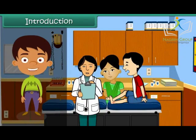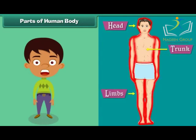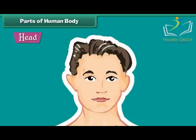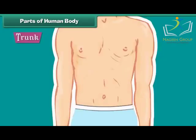In this lesson, you will learn about the different organ systems of our body and their functions. The human body is divided into three main parts: head, trunk, and limbs. The head is the uppermost part of the body. Eyes, ears, nose, and mouth are located on it. The trunk is the middle part of the body and is divided into chest and abdomen.